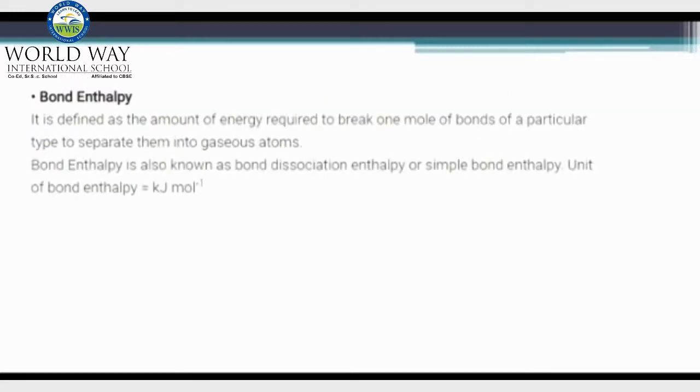Bond enthalpy is the energy required to break one mole of bonds of a particular type of compound and finally to separate them into gaseous atoms. They are expressed in the unit of kilojoules per mole and they are simply called as bond dissociation enthalpy, responsible for breaking one mole of bonds.